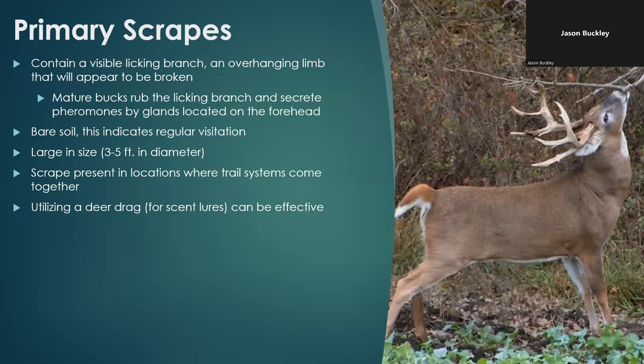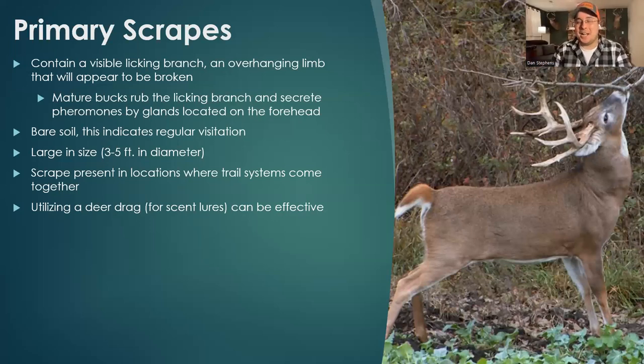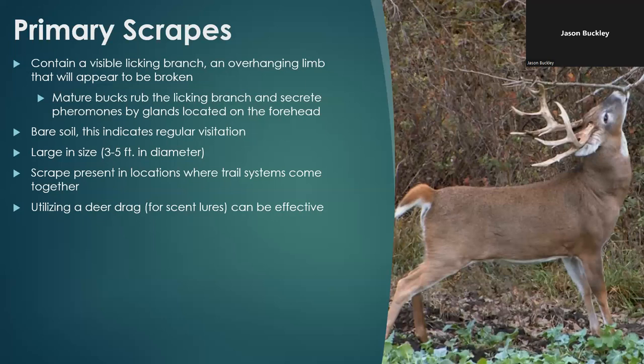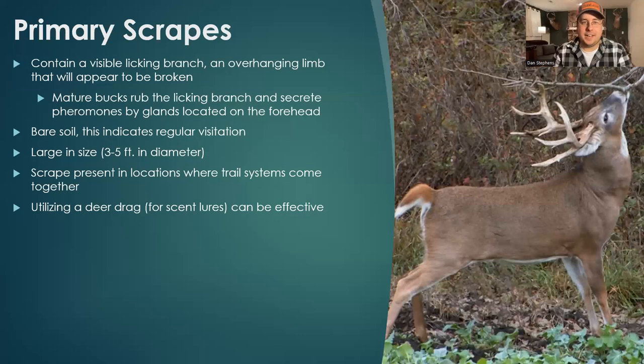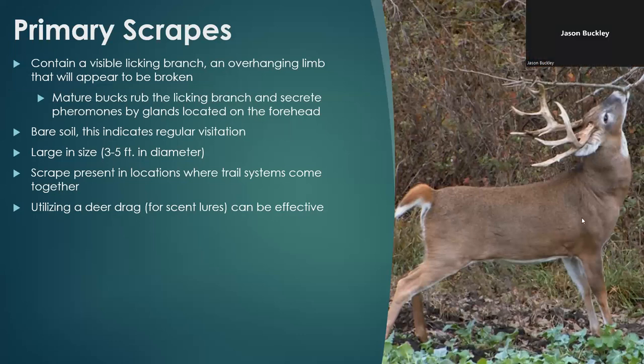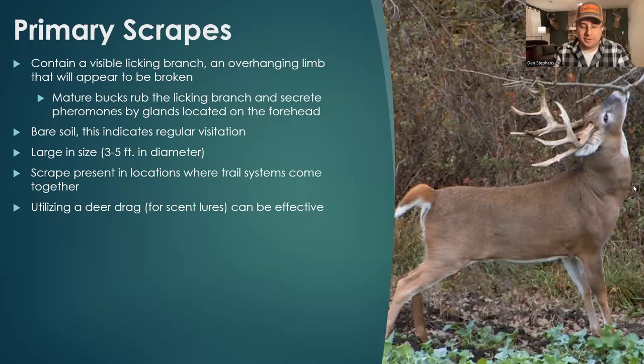The theory is: a buck checks his scrape, detects the doe-estrus scent trail, and immediately starts trailing her right to your stand. Dan used this exact strategy during the first firearm season and had a two-and-a-half-year-old ten-pointer hit the scrape and walk nose-to-ground straight into his stand. You can also drag the scent trail all the way to your stand and place cotton swabs in the cardinal directions around it. Just never spill it on yourself — and pick up every swab afterwards so you don't litter.